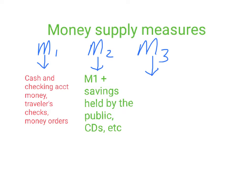M2 includes M1, so everything that's in M1 is also in M2, plus it has savings held by the public — so money market mutual funds or money market deposit funds, or if you have money in a CD, a certificate of deposit — all of that is also money that is in M2. The unique part of M2 is a little bit less liquid than the components in M1.